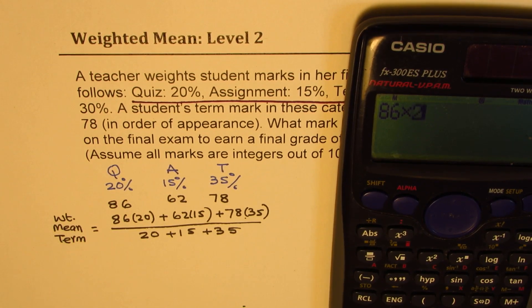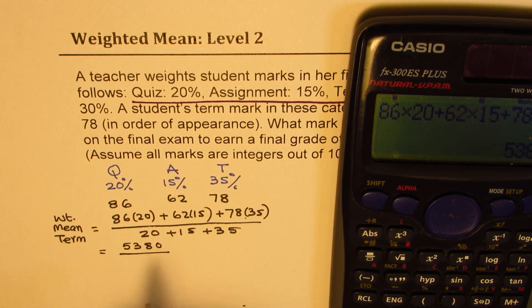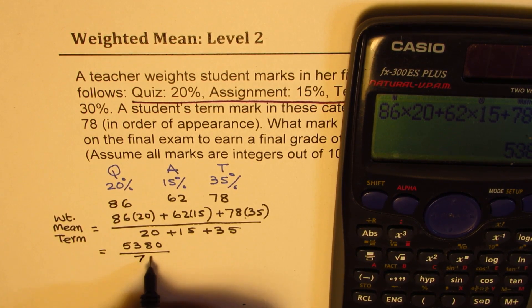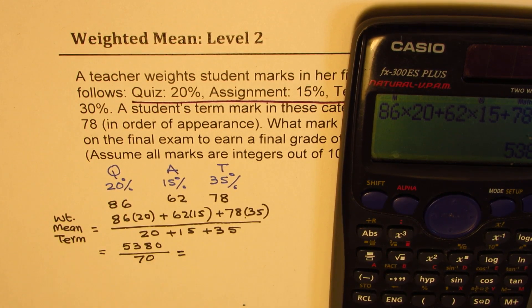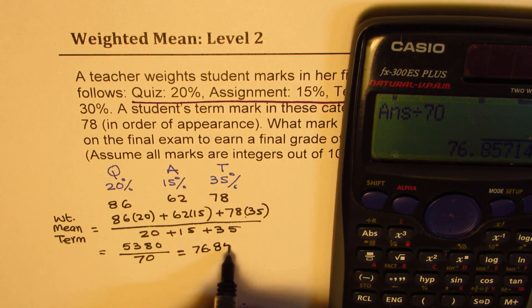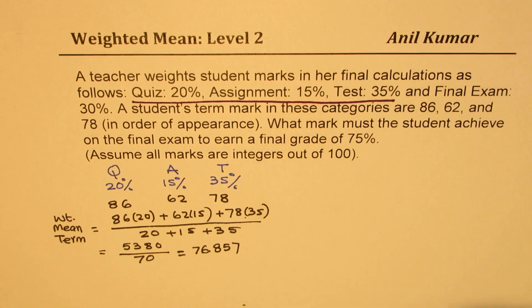20 plus 15 plus 35, got it? So that is how you calculate weighted mean equal to 5380. Let me rewrite here: 5380, and we have to divide this by the sum of these, which is 70. So we are going to divide this by 70, which gives us in decimals 76.857.